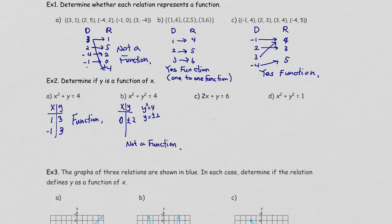For the next one, try x = 0: the x term becomes 0 and y = 6 — one solution. If you try x = 1, you get y = 6 - 2 = 4, still one solution. No matter what number you plug in, you get only one solution, so this is a function.